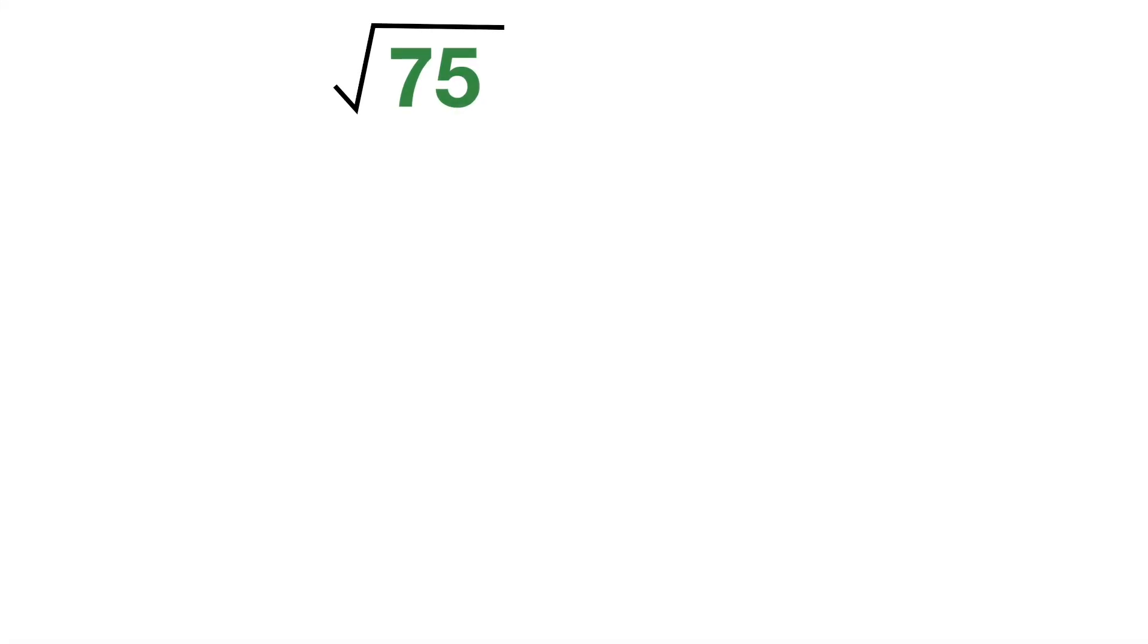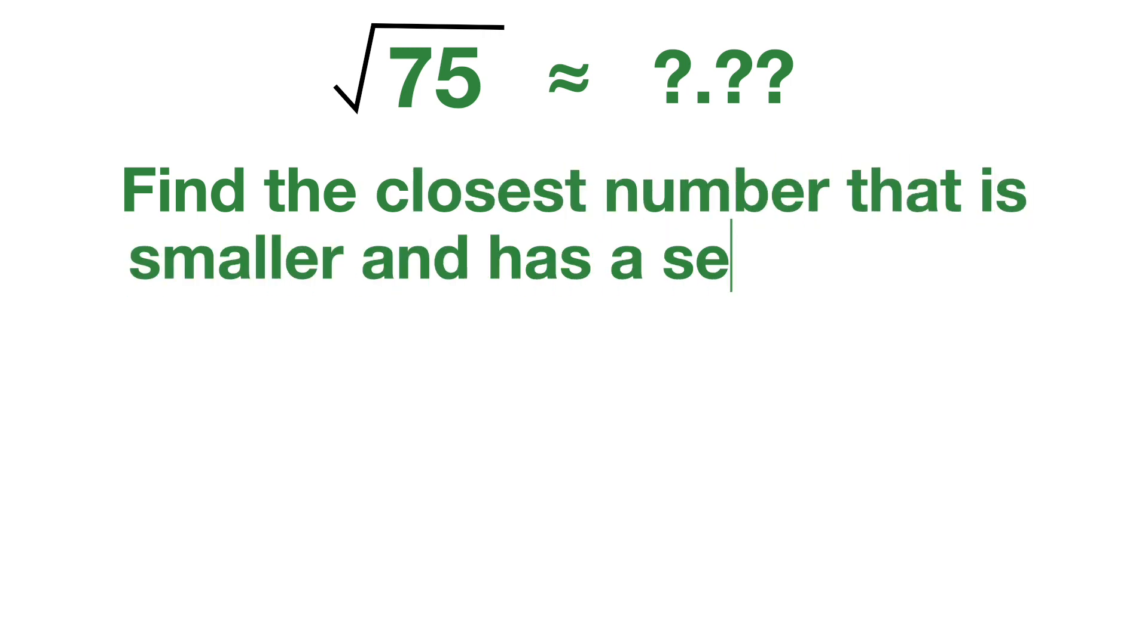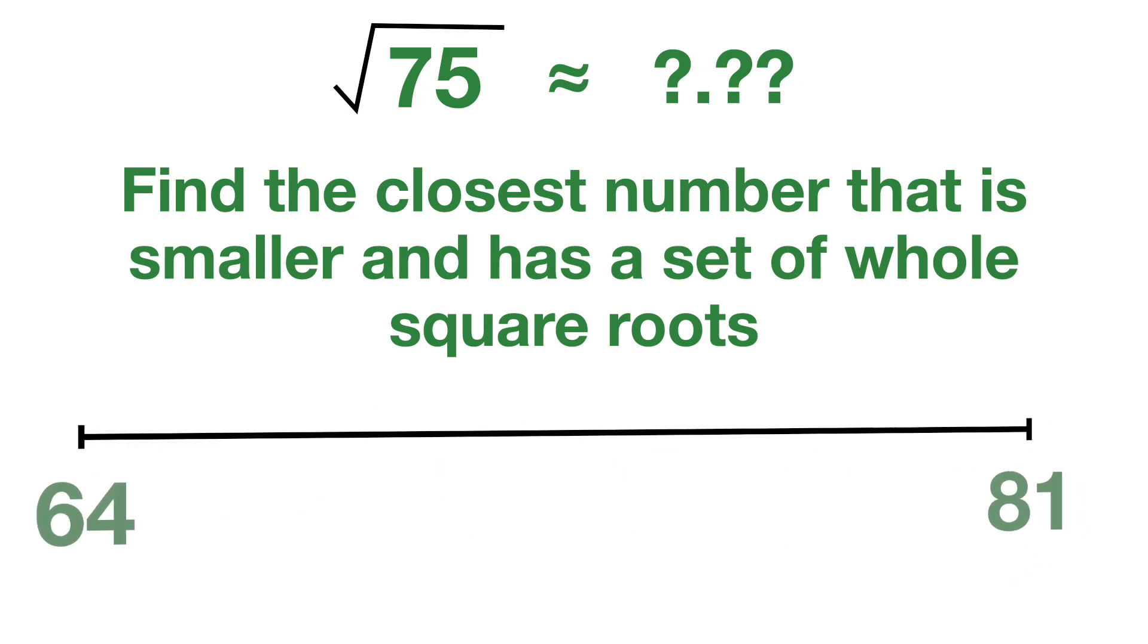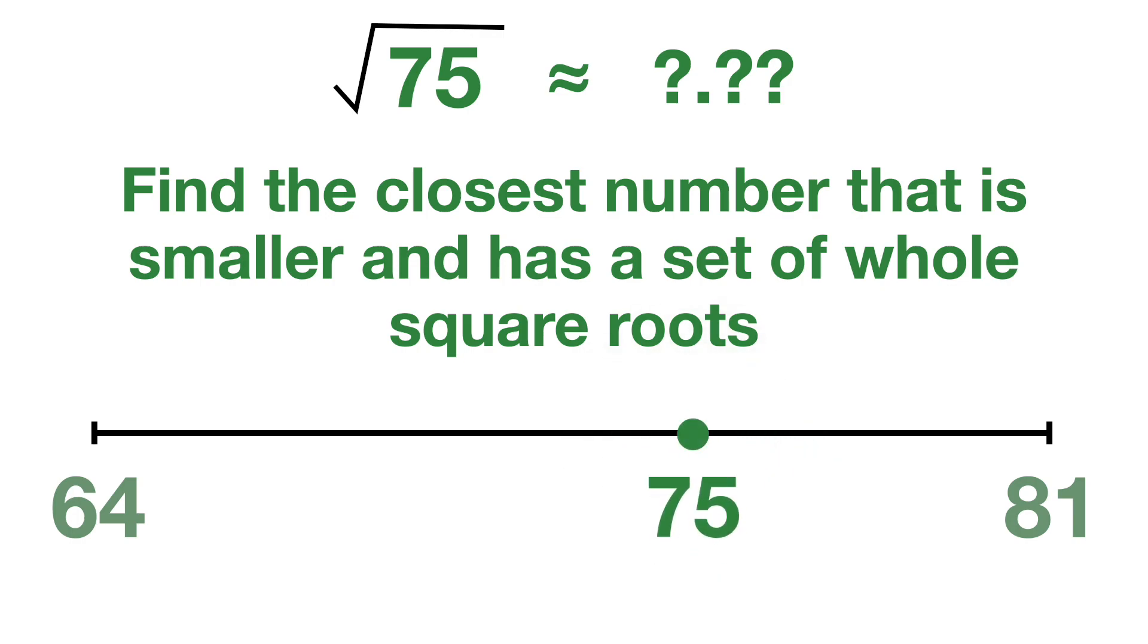We're going to approximate the square root of 75 to two digits. First, we'll find the closest number smaller than 75 that has a whole square root. On a number line, 64 and 81 both have whole square roots. If you place 75 here, your brain might want to say 81 is closest, but that's not how you do this. You always have to pick the smallest number next to it with whole square roots. In this case, that's 64.